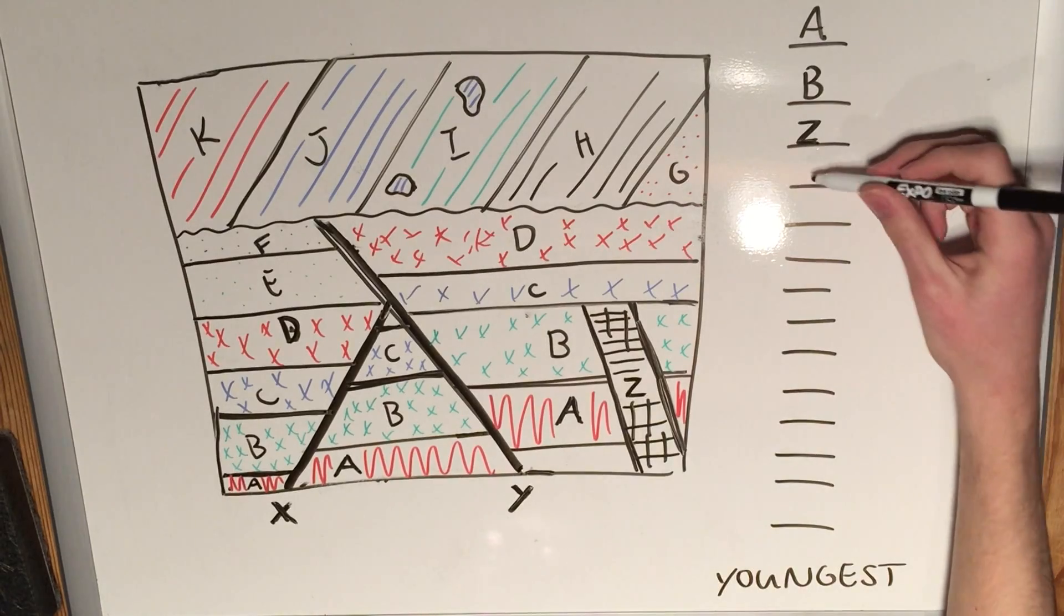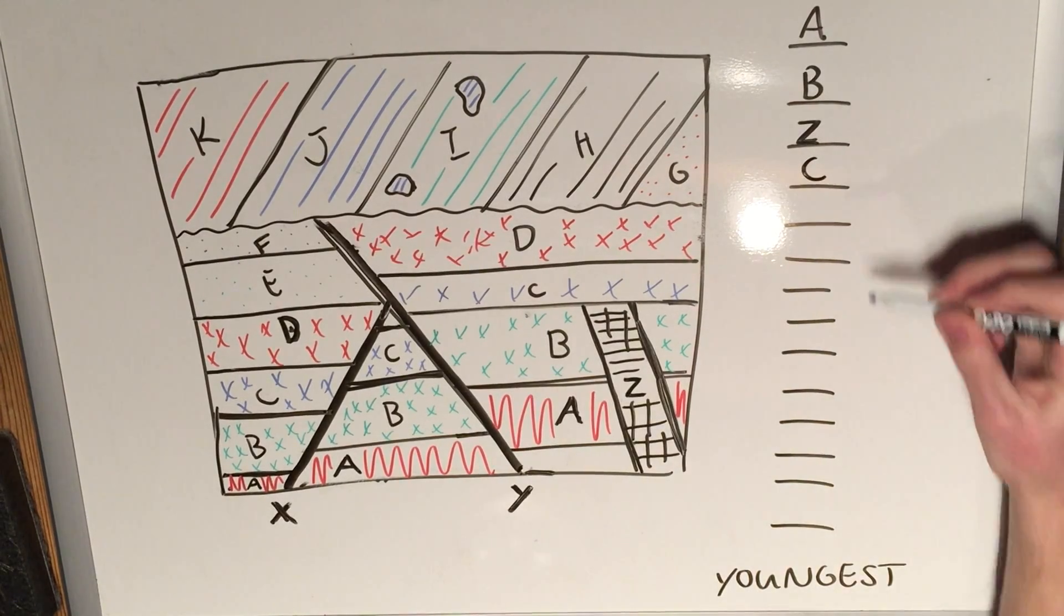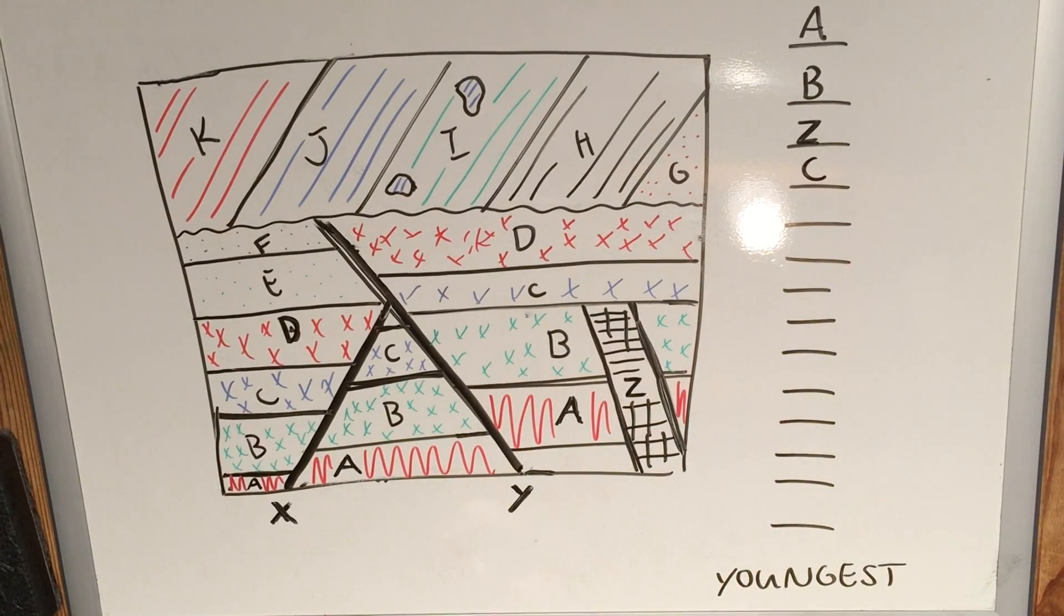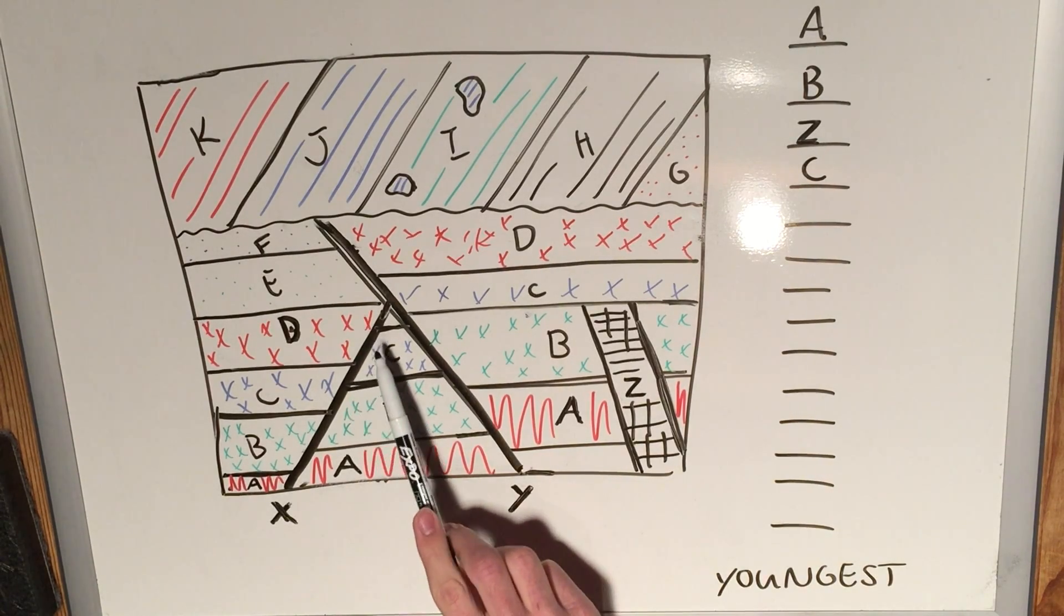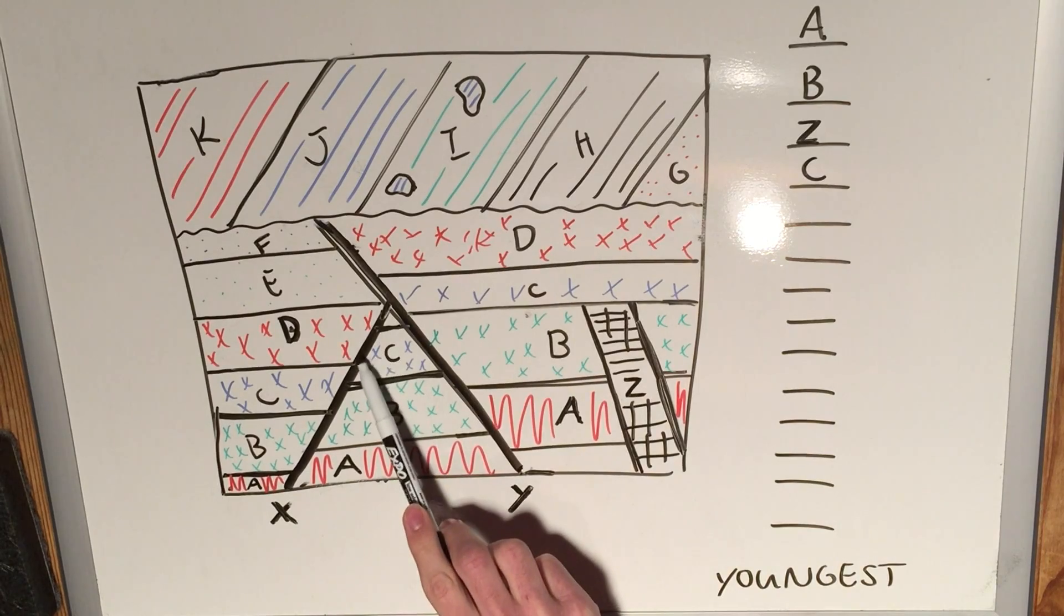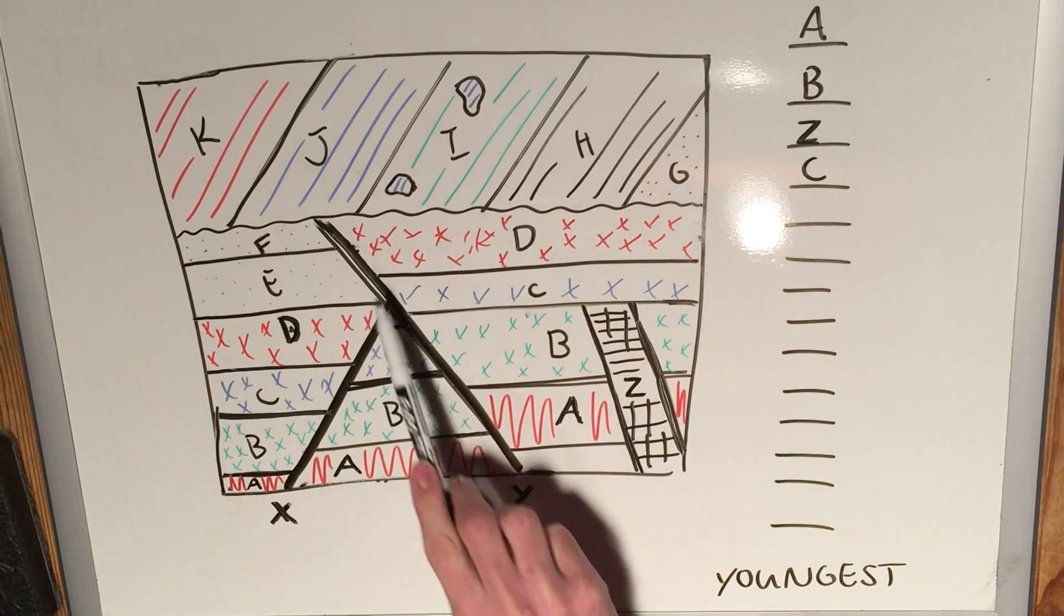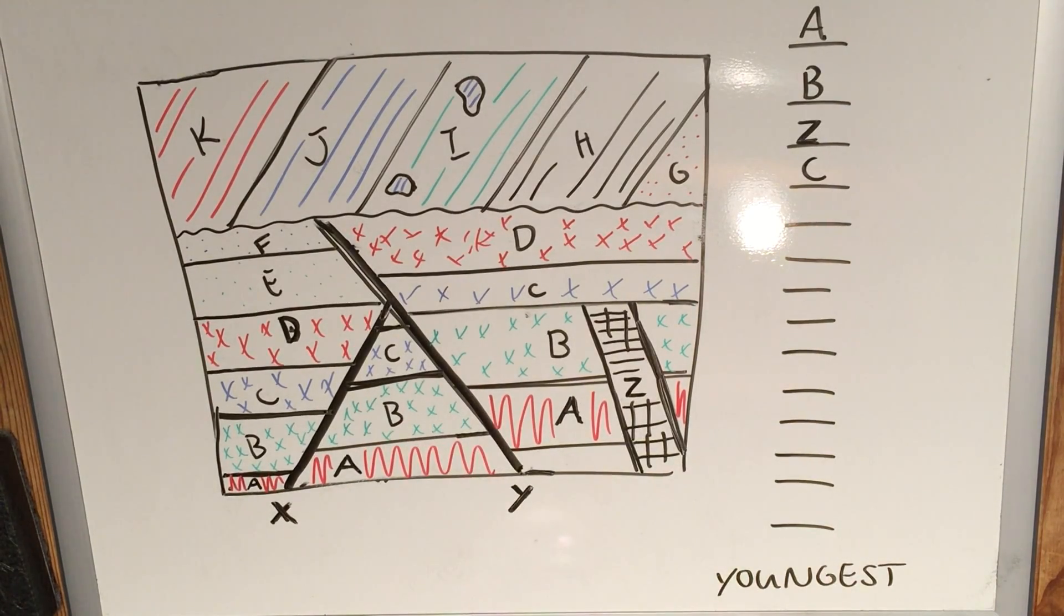So Z comes and then C. Once again, it's younger than D, X, and Y, so C must be next. Moving along nicely, then we come up to D. And we look at D here, and we can't actually—when we look at this, it appears to be affected by this fault as well as this fault, which is where now we have to take into account what type of faulting has occurred.